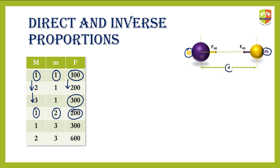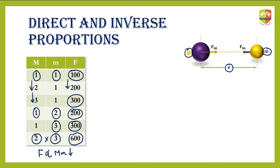Keeping the distance unchanged, when I triple the smaller mass the effect triples. When I double the first and triple the second, the net effect is six times — that is 2 times 3. So F is directly proportional to the product of masses. Increasing the product of masses increases the force, decreasing it decreases the force. A real-life example of direct proportion: as you grow in age your height grows up, so height is directly proportional to your age up to a certain point.